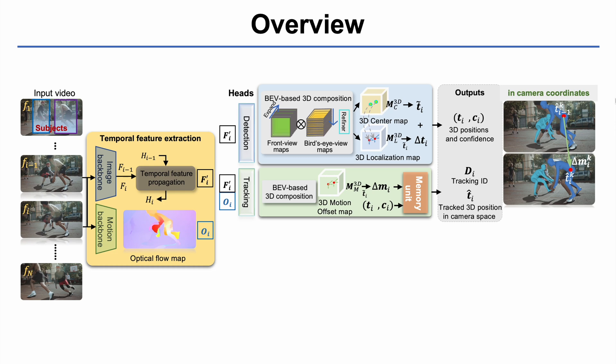The tracking branch estimates the 3D motion offset map, indicating the 3D position change of each subject from the previous frame to the current frame. From the estimated 3D detections and 3D motion offsets, a memory unit determines the subject identities and builds human trajectories in camera coordinates.